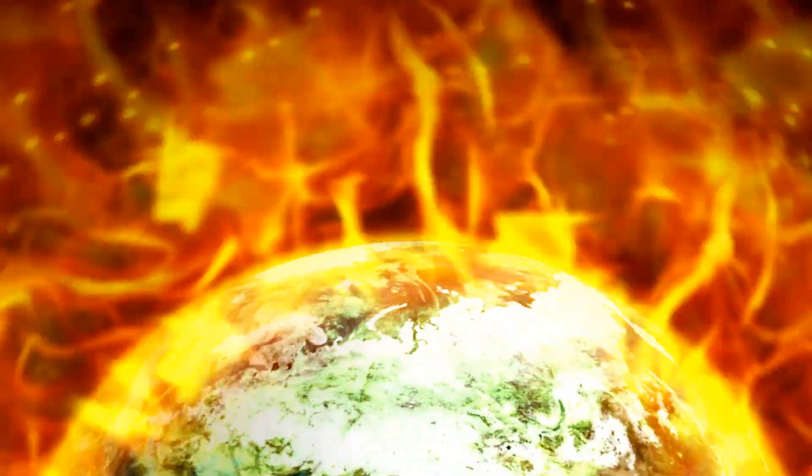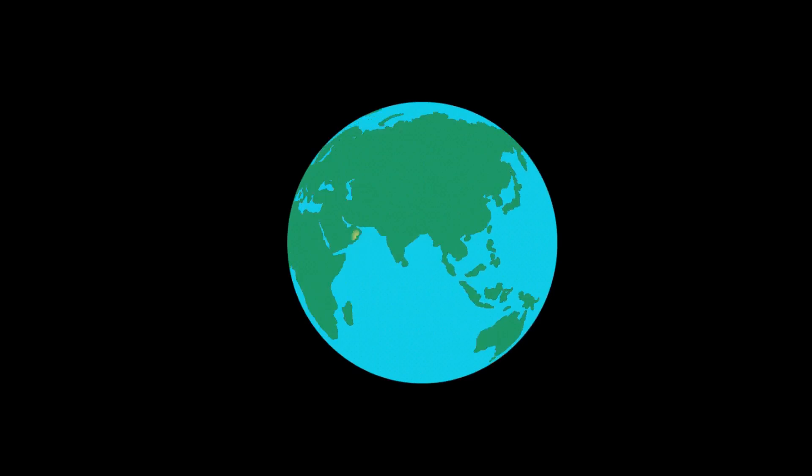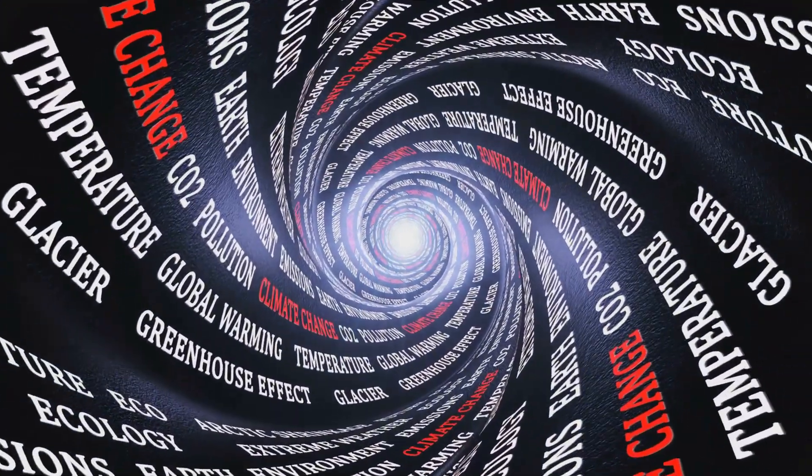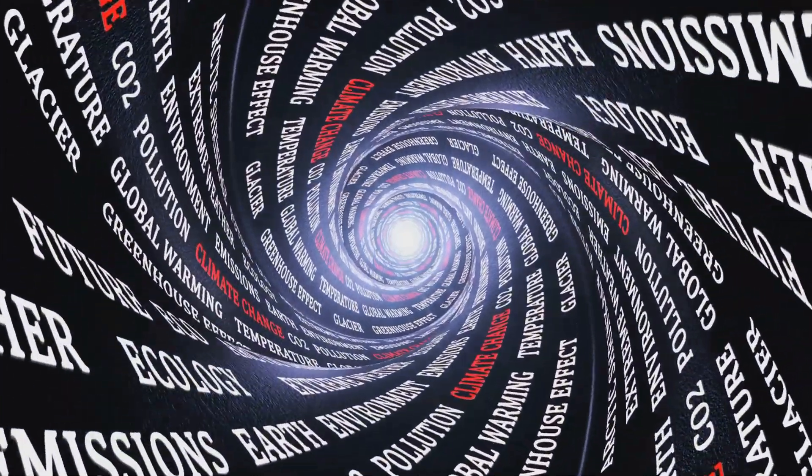Without rotation, Earth's weather systems would collapse. The Coriolis effect, which guides wind and ocean currents, would disappear. This would lead to unpredictable and extreme weather patterns, with superstorms forming regularly.